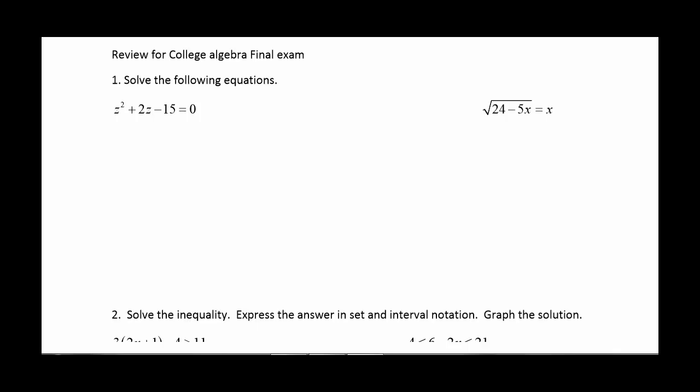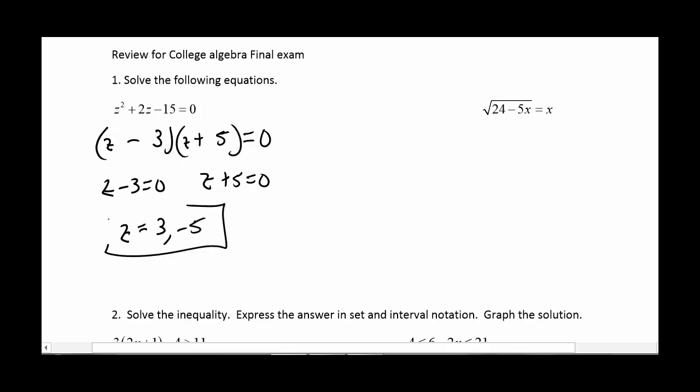So number one, we are asked to solve a quadratic equation. In this case, it's always a good idea to start with factoring. Let's see, z and z, 15. So that would be 5 and 3. Let's play with our signs here. I need the 5 to be the big one and the 3 to be the minus. And if I FOIL that, I should get a positive 2z in the middle. So set each one of my little binomials equal to 0. And so I get that z is 3 and negative 5.